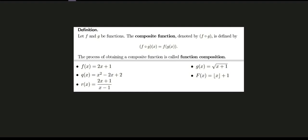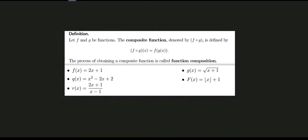So we have this given definition: let f and g be functions. The composite function, denoted by f∘g — we have this small letter 'o' — is defined by (f∘g)(x) = f(g(x)). The process of obtaining a composite function is called function composition.